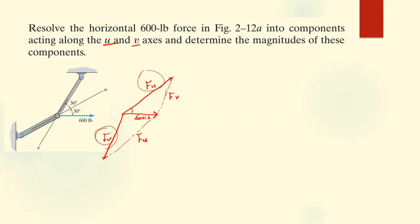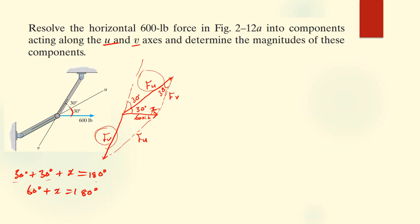We know this part is 30 degrees. When you draw a line in the u component direction, this angle is also 30 degrees by alternate angles. Since all internal angles of a triangle add up to 180 degrees: 30 plus 30 plus x equals 180, giving 60 plus x equals 180, therefore x equals 120 degrees.